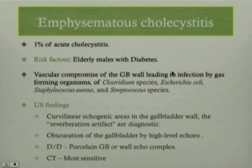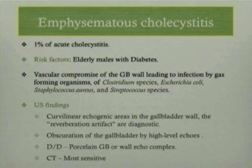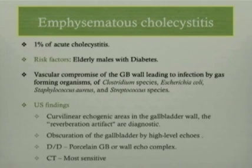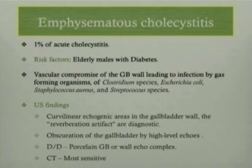Emphysematous cholecystitis is a rare entity, accounting for about 1% of all cases of acute cholecystitis. The main risk factors are elderly males with diabetes mellitus. There is vascular compromise of the gallbladder wall leading to infection by gas-forming organisms, mainly Clostridium and E. coli. Ultrasound findings consist of curvilinear echogenic areas in the gallbladder wall with reverberation artifact. The differential diagnosis includes porcelain gallbladder, though posterior acoustic shadowing is more discrete and sharp compared to reverberation artifact. CT is more sensitive and helps make the diagnosis with ease.